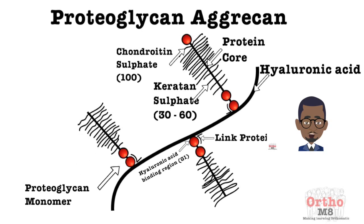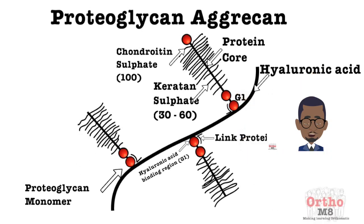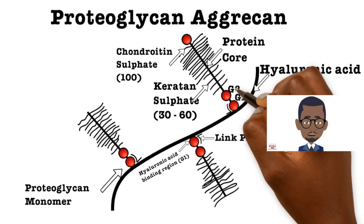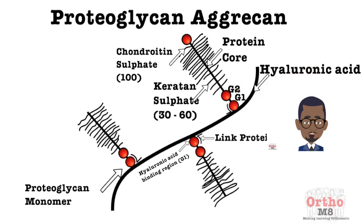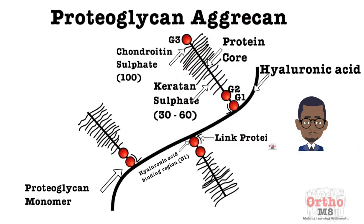There is non-covalent binding of proteoglycan to hyaluronic acid (HA) with the link proteins. G1, G2, and G3 are globular, folded regions of the central core protein.